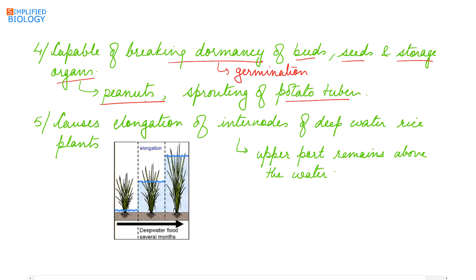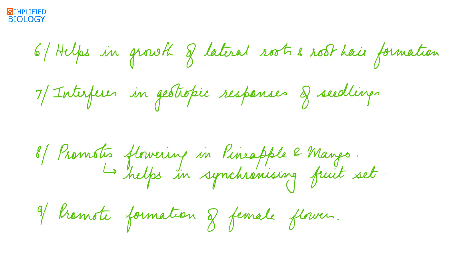Fifth, it causes elongation of internodes of deep water rice plants. In deep water rice plants, it causes the elongation of internodes so that the upper part of the plant remains above the water level. Sixth, it helps in growth of lateral roots and root hair formation, hence increasing surface area for absorption of water by the roots.